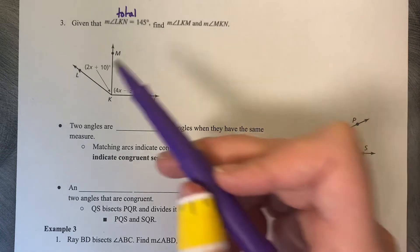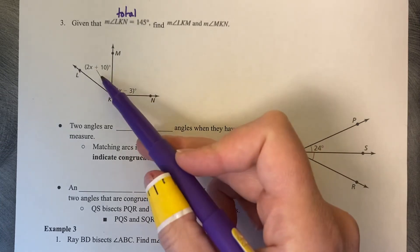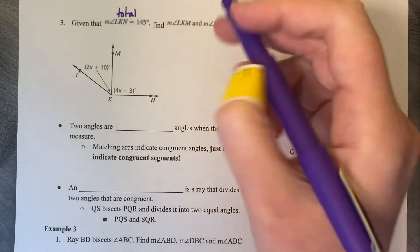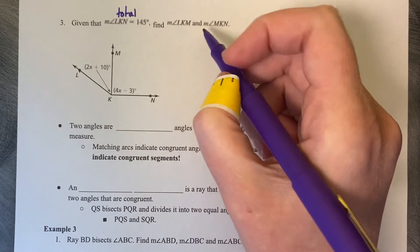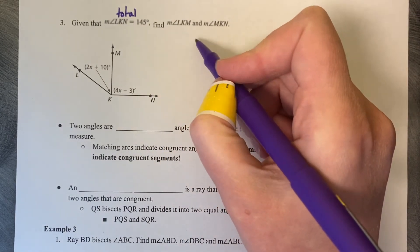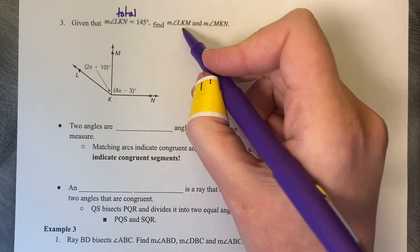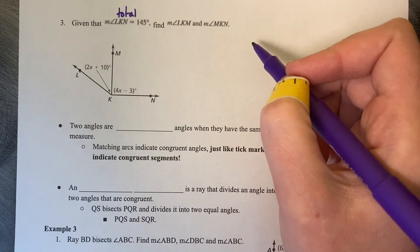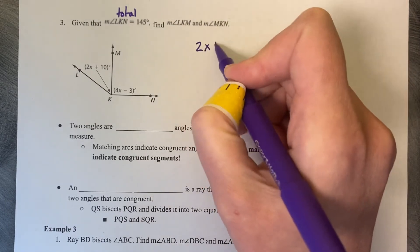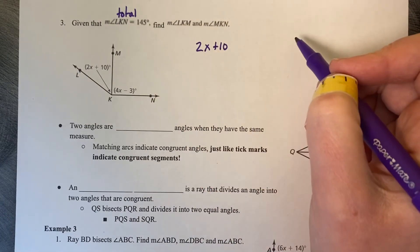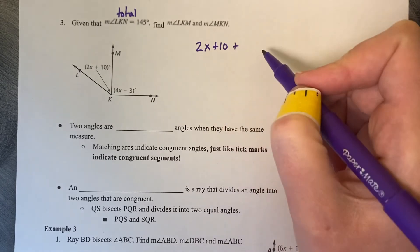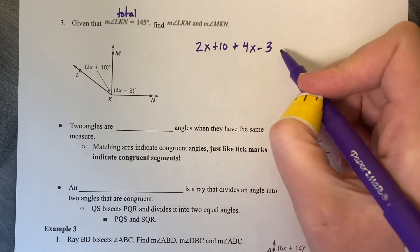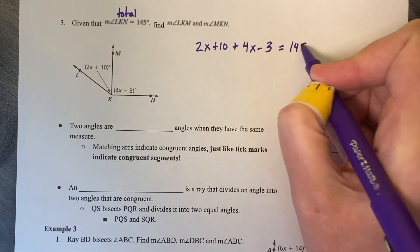So this is very similar to segment addition. This is angle addition. Part plus part equals whole. So we're going to take our two angle measures. So we're going to take the measure of LKM and MKN and set that equal to 145. So 2x plus 10, that's LKM, plus our other part, 4x minus 3, that's MKN, equals 145.